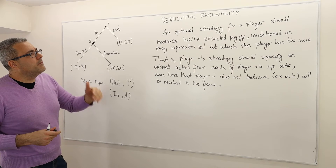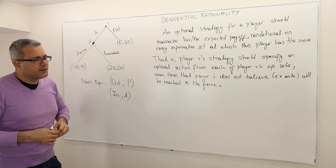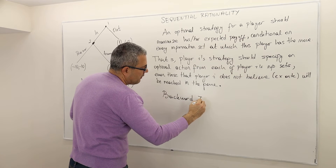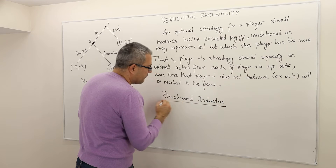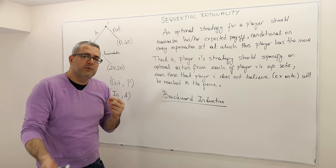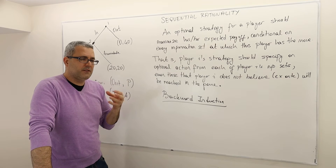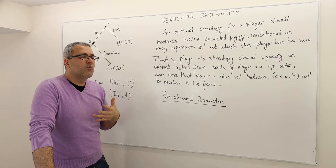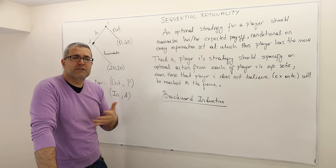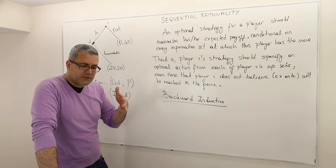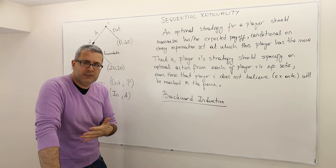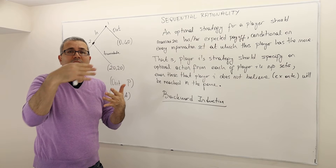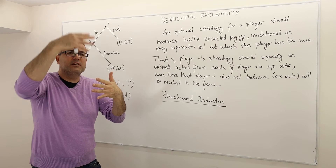So that's what we mean by sequential rationality. And this actually brings us to the idea of what's called backward induction. It basically says: if we are expecting an optimal strategy to be payoff-maximizing at every decision node or at every information set a player has throughout the game, then why don't we start from the last information set — the last player who moves — and maximize his payoff, then move one step up to the second-last player's optimal strategy, then the third-last, and so on.